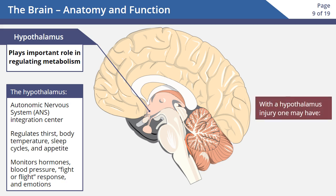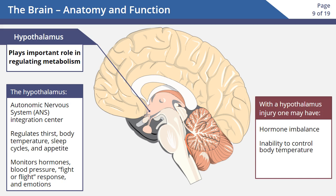Someone with an injury to the hypothalamus may have a hormone imbalance, an inability to control their body temperature, and a decreased ability to adapt to change.